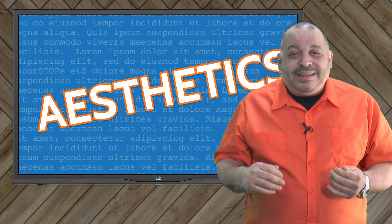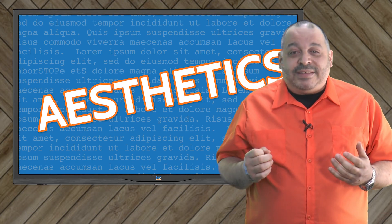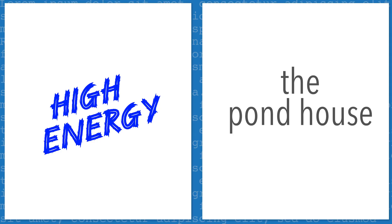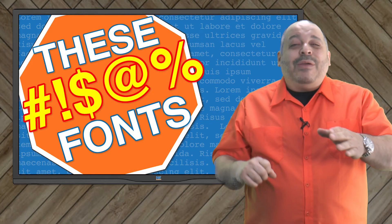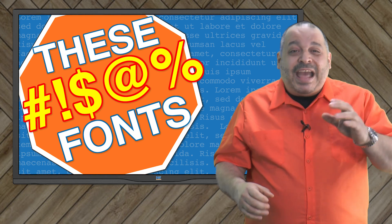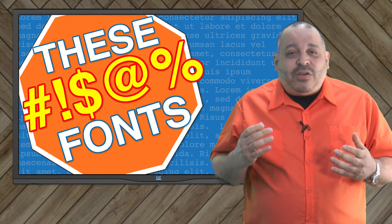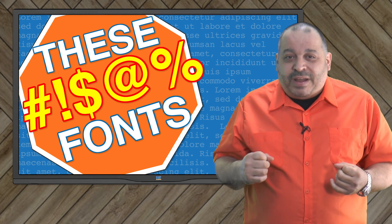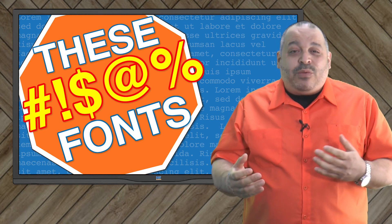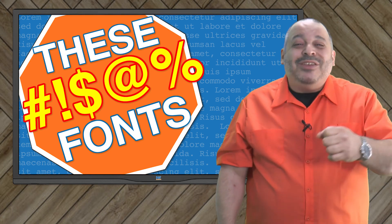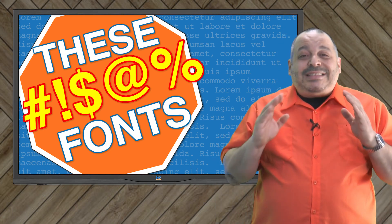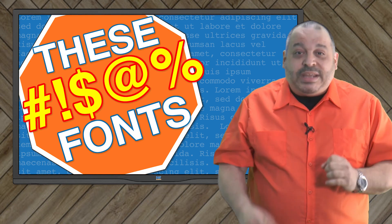Mood is also part of the aesthetic. Let's take a look at two more typefaces — on the left, the mood is energetic and dynamic; on the right, the typeface has a more relaxing vibe. You can probably imagine very different use cases for these two typefaces. With that short lesson in choosing typefaces, now we're ready for the list of fonts you need to stop using.